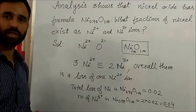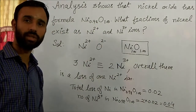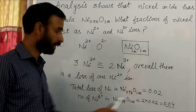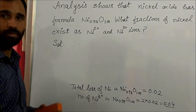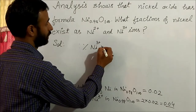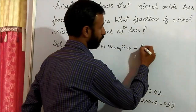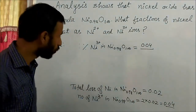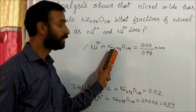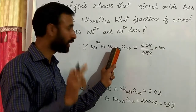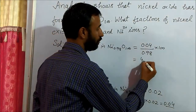What is the percentage of Ni³⁺? Out of 0.98 total nickel, we have 0.04 as Ni³⁺. Percentage of Ni³⁺ = (0.04 / 0.98) × 100. The total nickel — Ni²⁺ and Ni³⁺ combined — is 0.98, of which Ni³⁺ is 0.04. This comes out to be 4.08%.